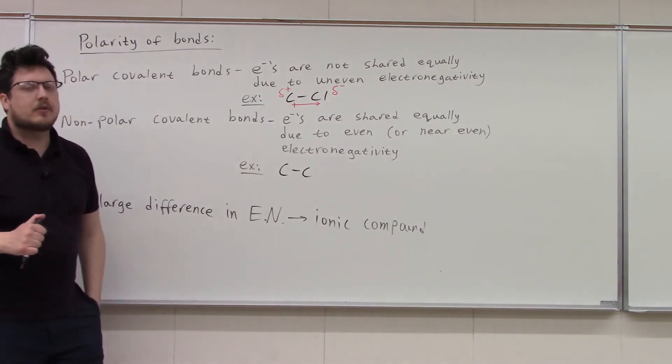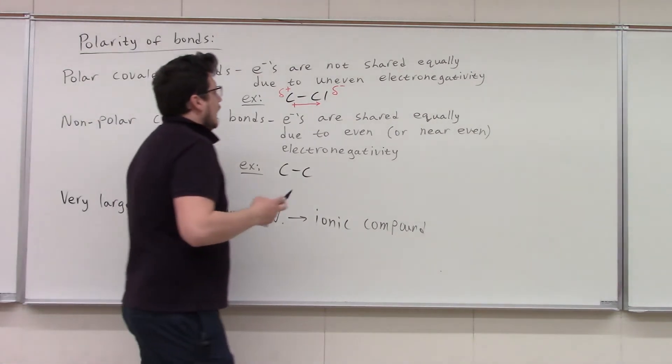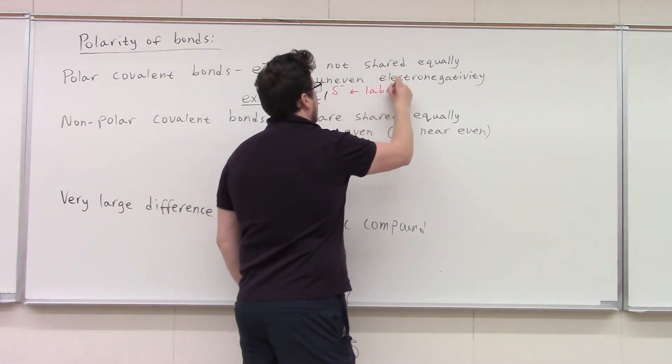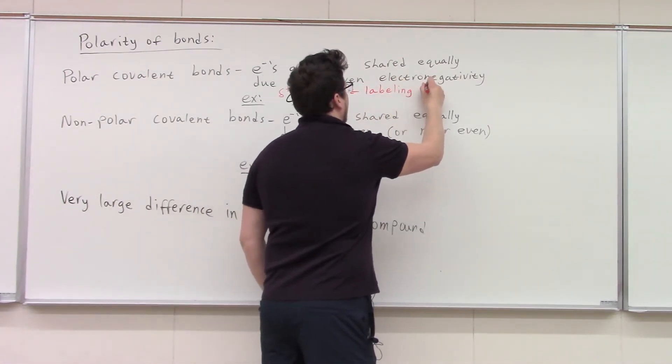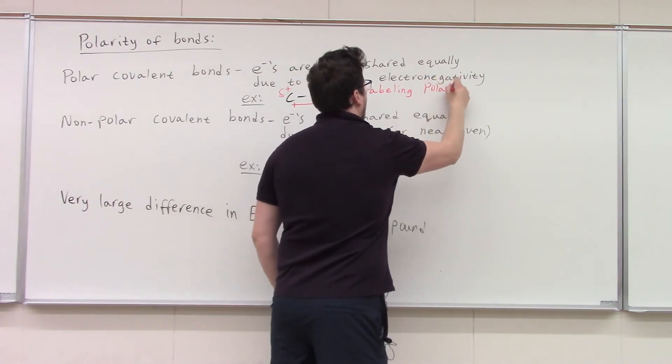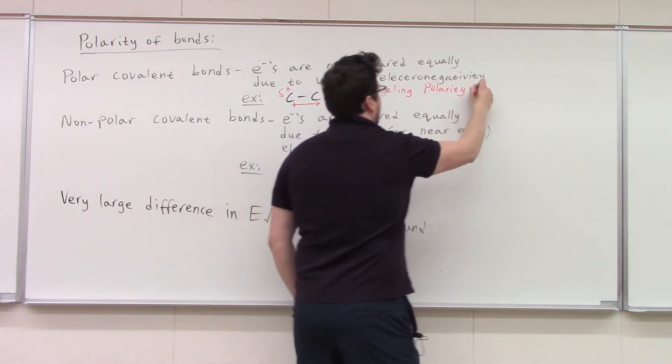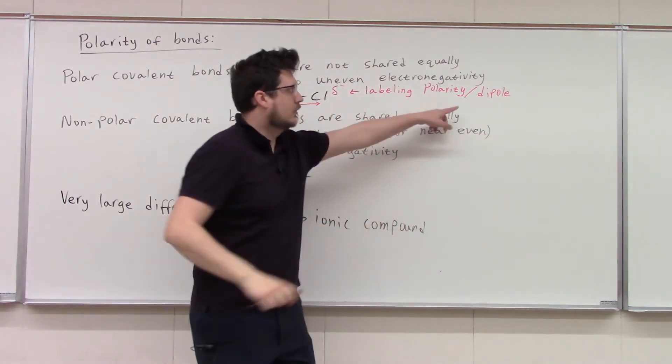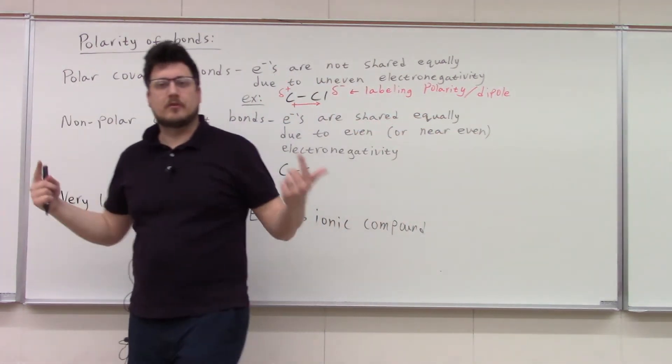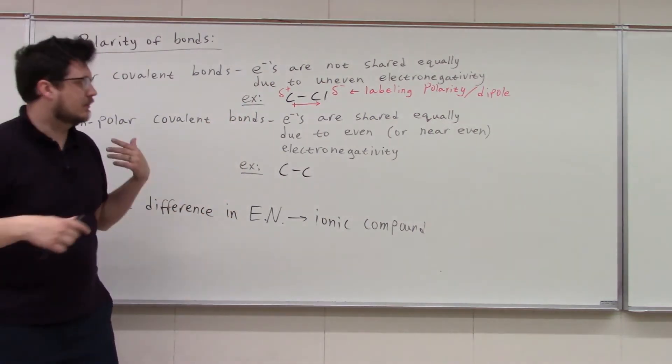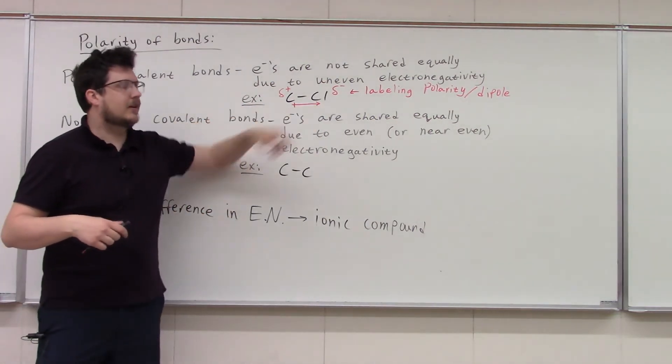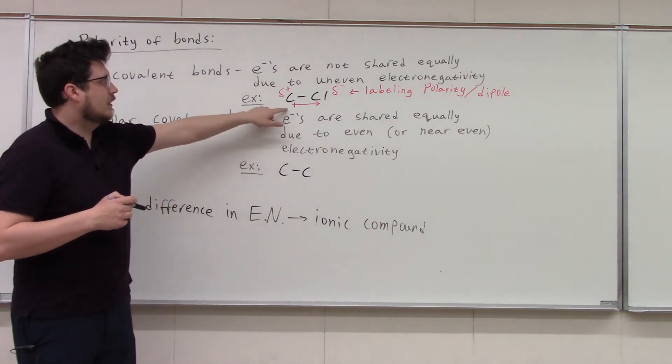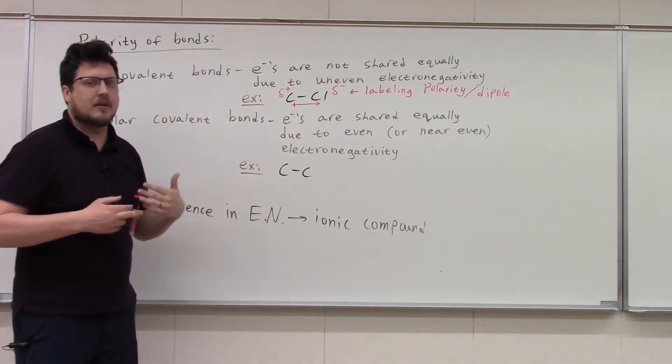But just be familiar if you look at diagrams or whatever. And so what we are doing is we are labeling the polarity slash the dipole. And we call it a dipole because there's two poles. There's a positive one and a negative one. So there's an area of positive charge, an area of negative charge that creates two poles. So that's why we call it a dipole. And to do that, we can use the arrow or these deltas, like I said.